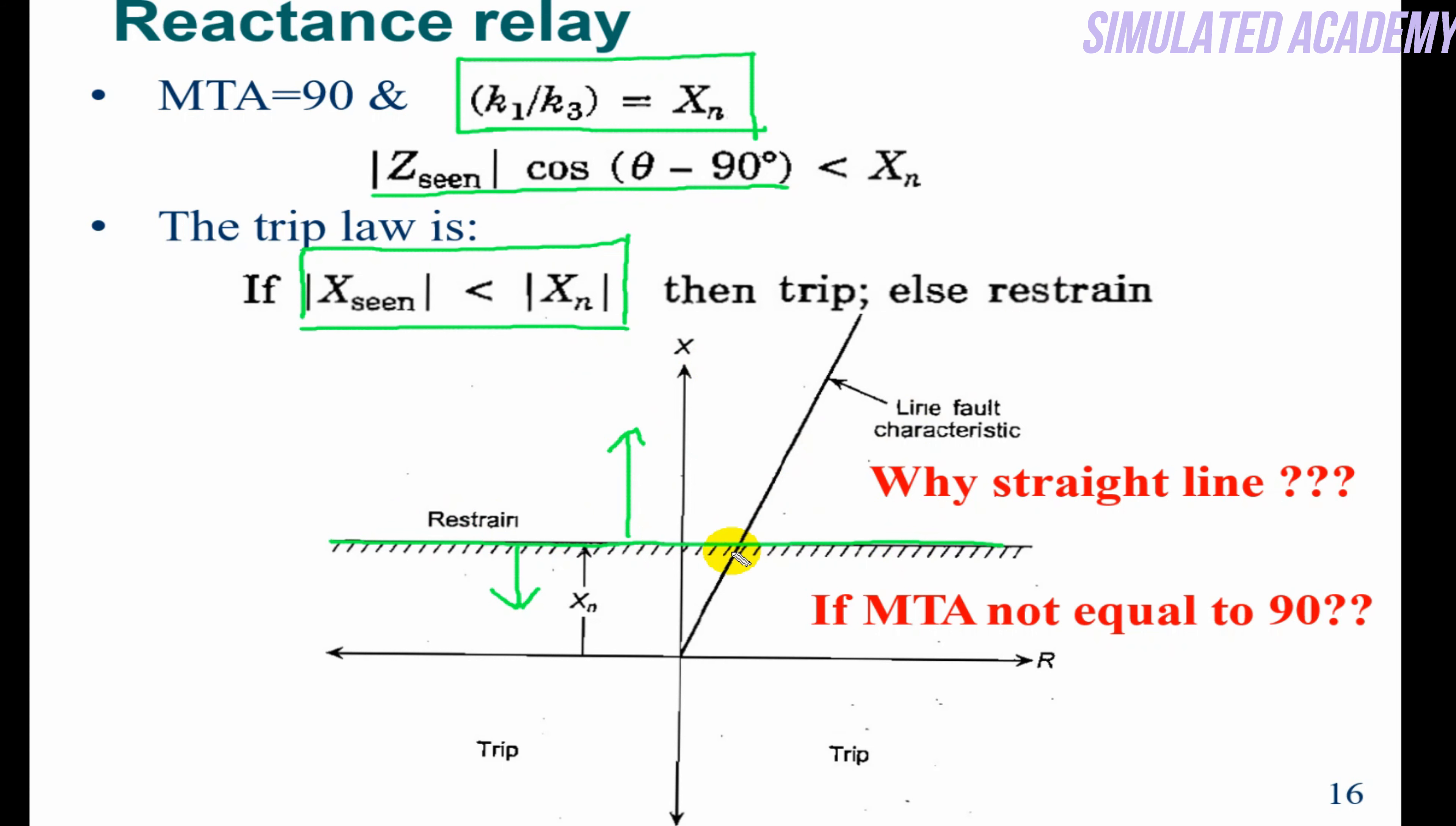MTA equal to 90, so it will just be a straight line. If MTA is not equal to 90, then the line will have some slope, right?